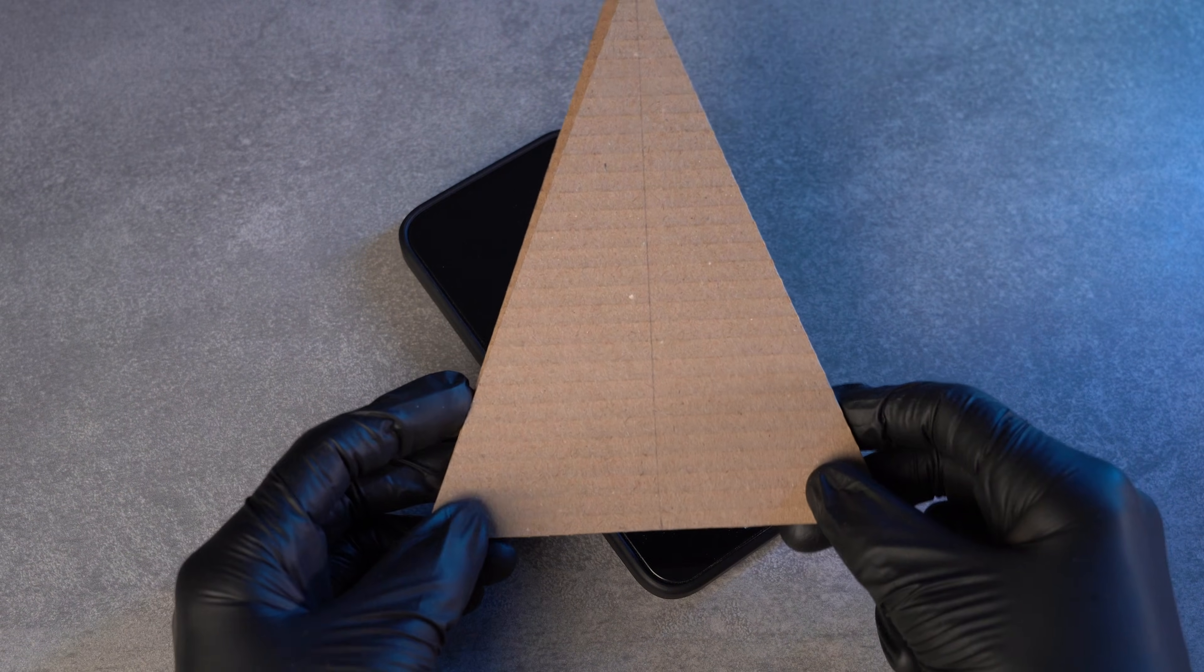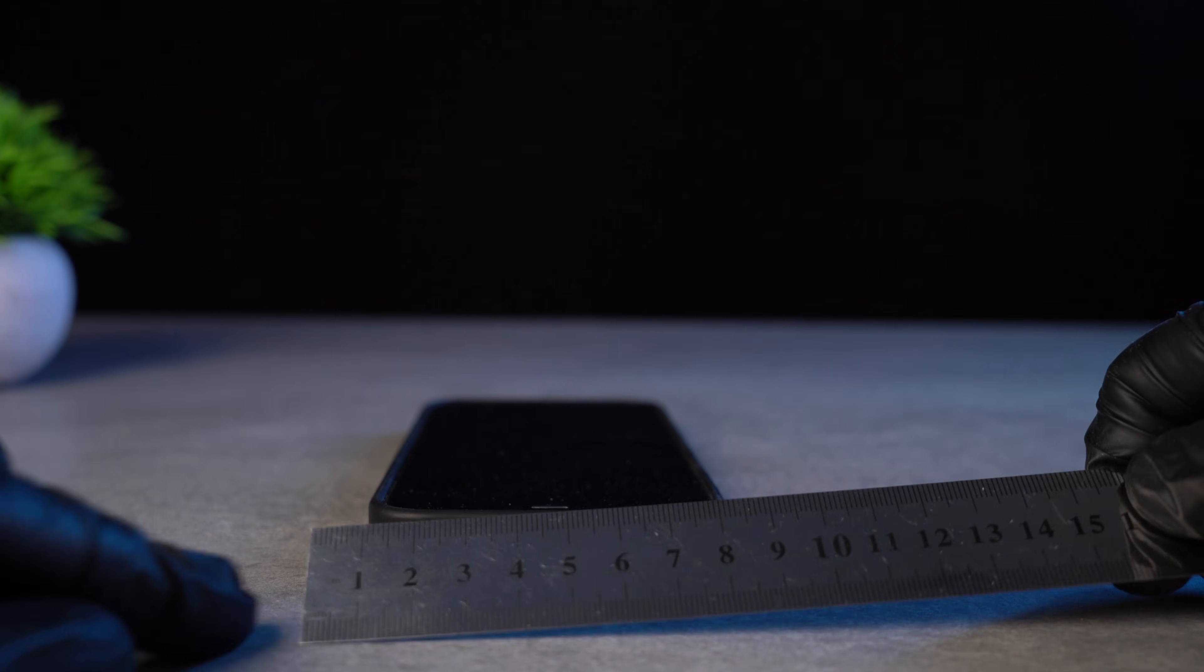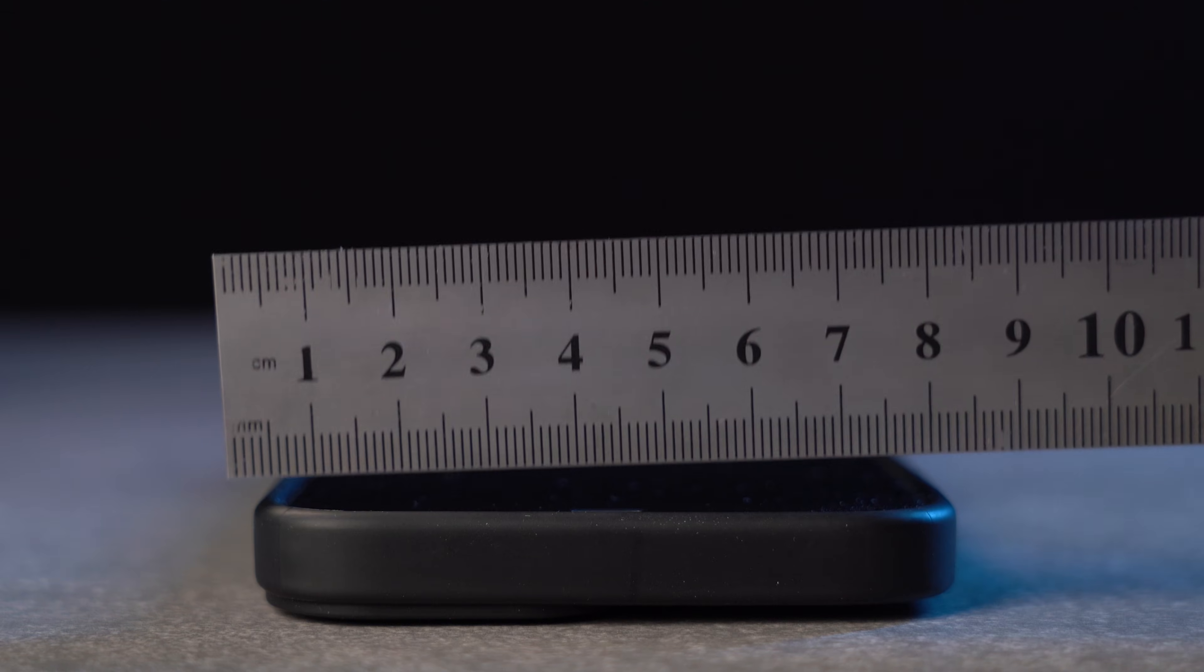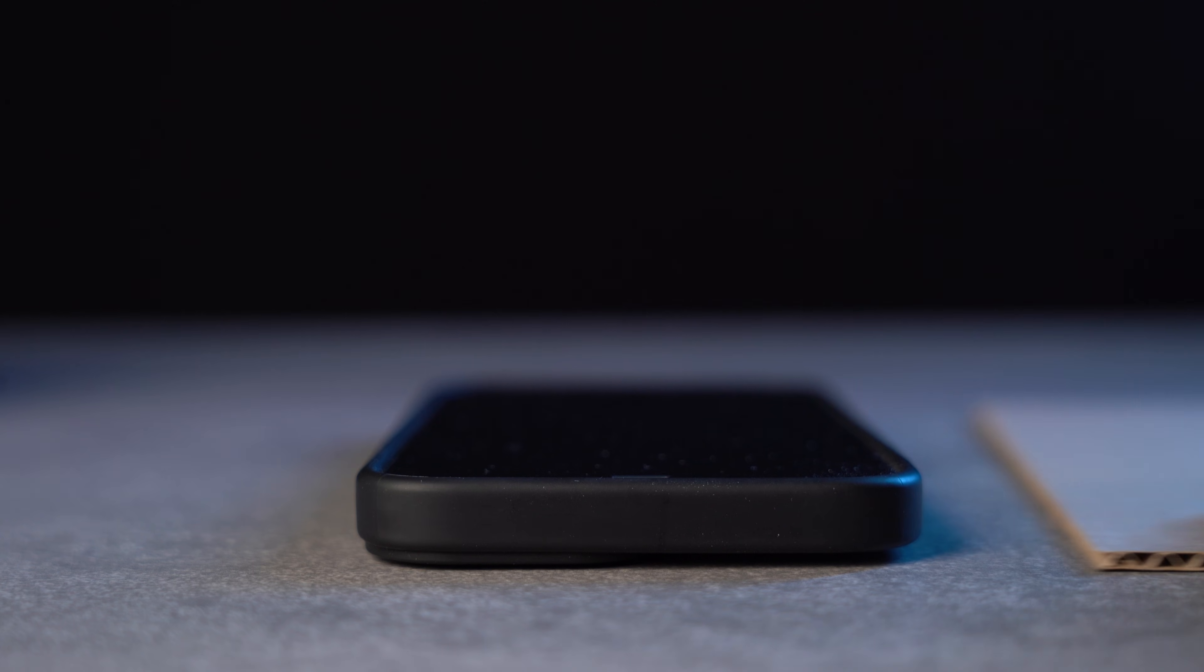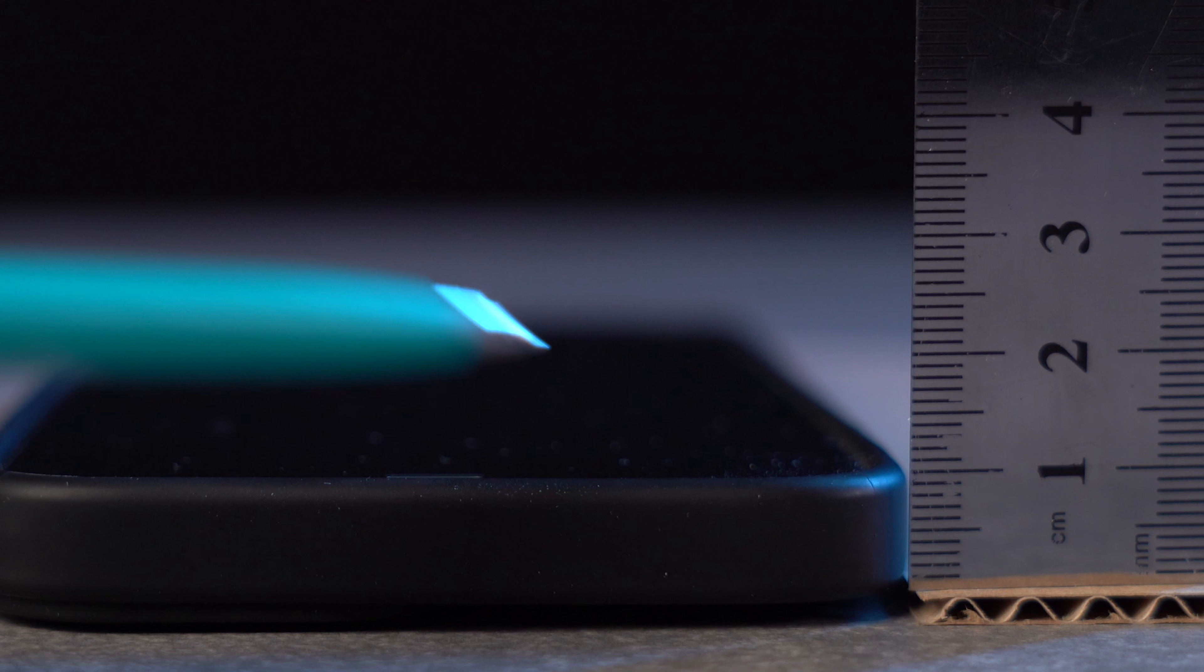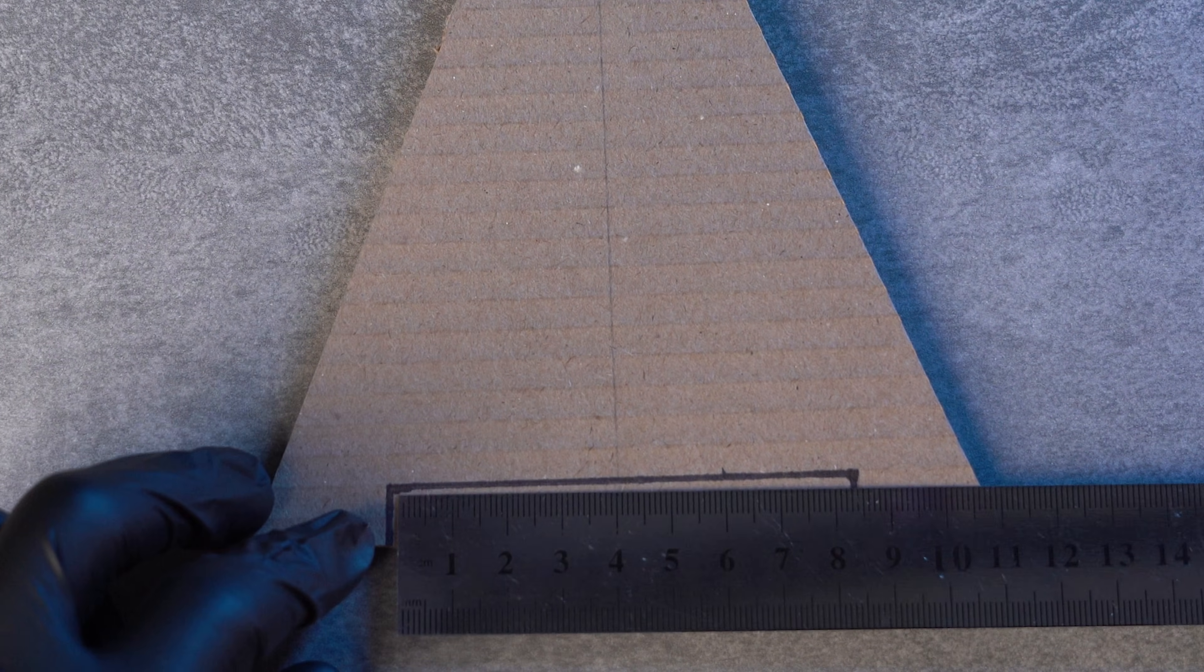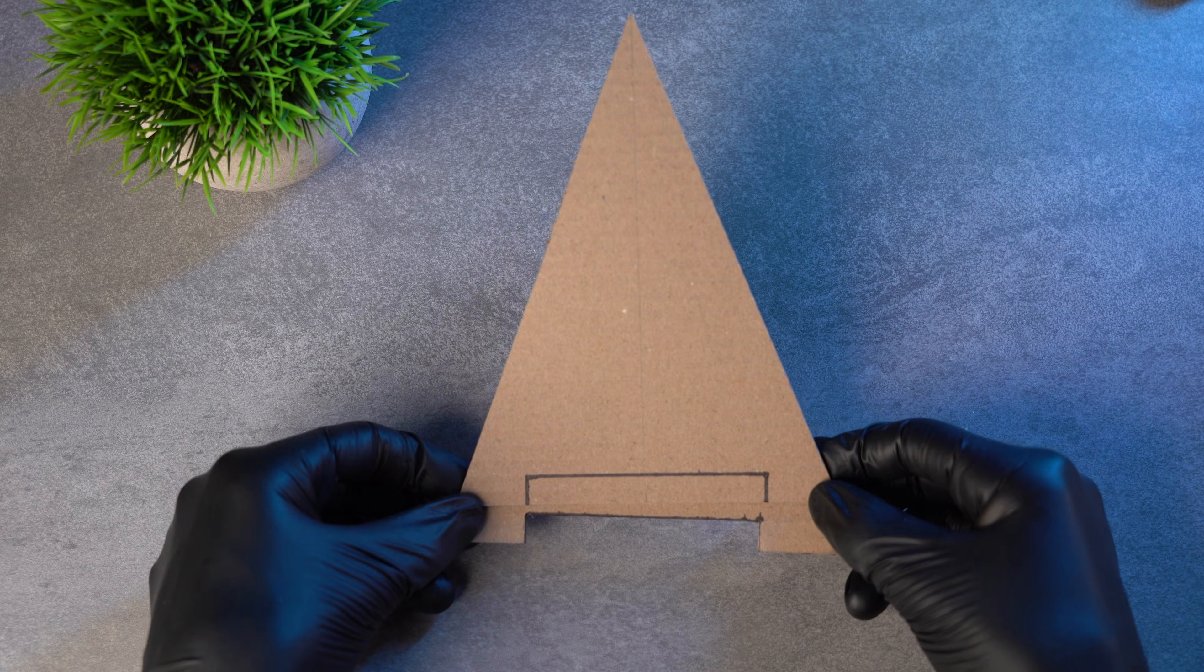Each triangle needs a cutout sized for your phone. My phone is 8cm wide, so I make the opening 8.5cm to give it a little extra room. The height depends on the cardboard at the bottom. In my case, it came out to 1cm. I marked the cutout in the center of the bottom edge using the measurements, and cut it out with the utility knife.